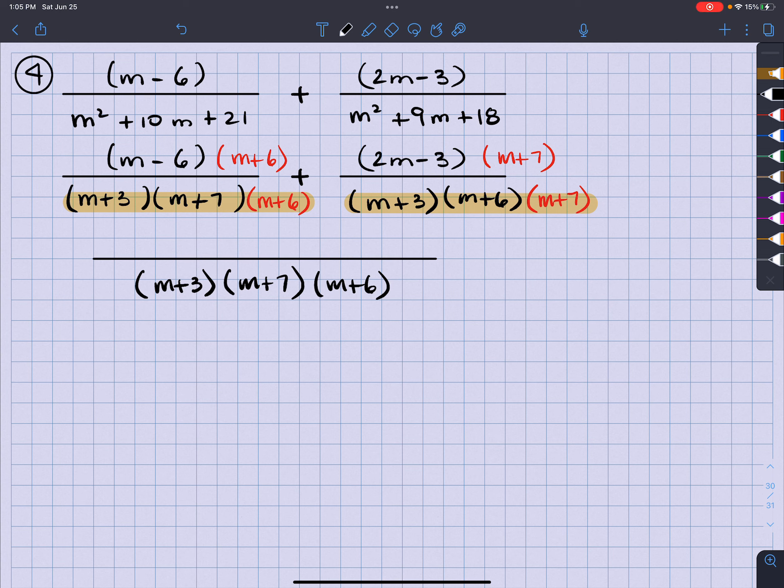The top is all the way across. So I got the M minus 6, M plus 6, plus 2M minus 3 times the M plus 7.